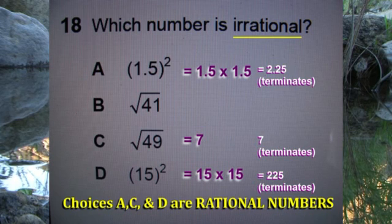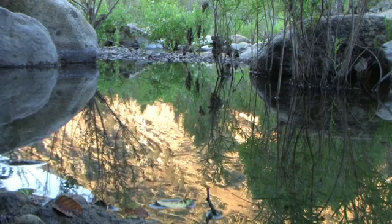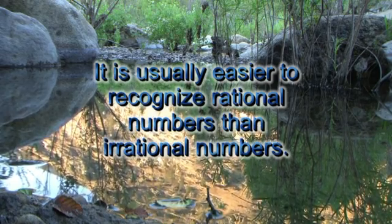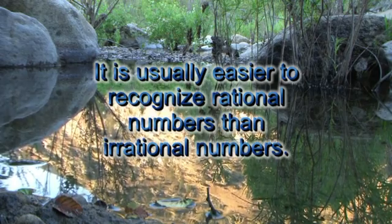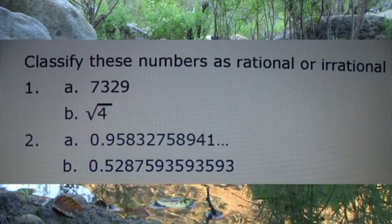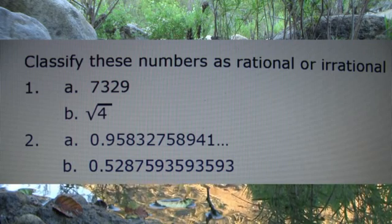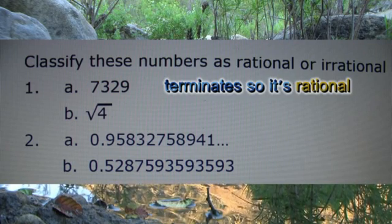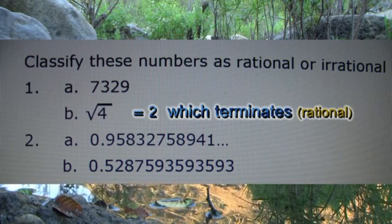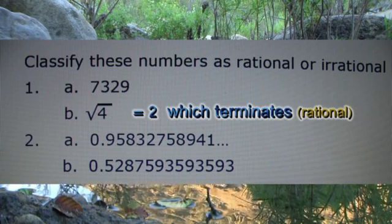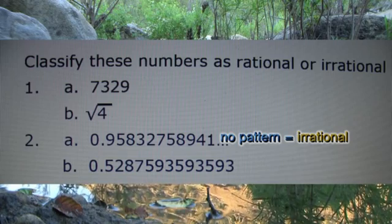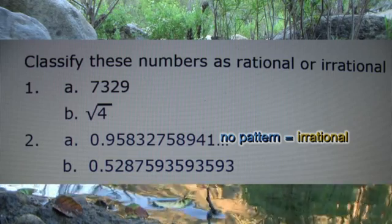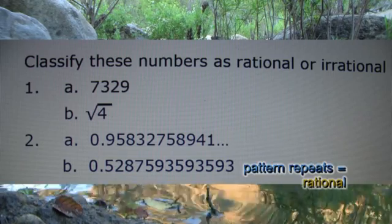It is usually easier to recognize rational numbers than irrational numbers. Classify these numbers as rational or irrational. 7,329 terminates, so it's rational. The square root of 4 is 2, which terminates — it's rational. 0.95832758 with no pattern — irrational. But the bottom one repeats: 593, 593, 593, 593 — that's a pattern, so it's rational.